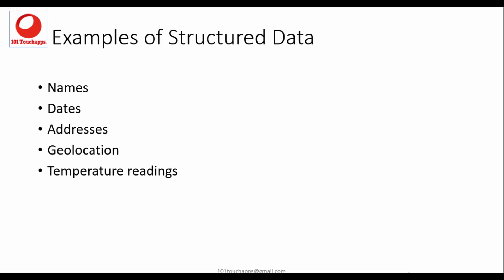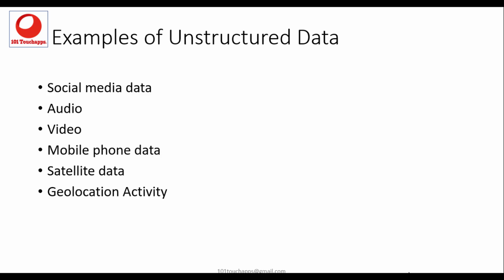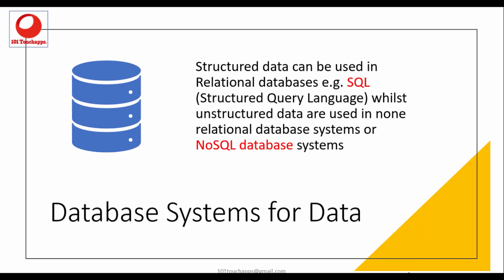So examples of structured data include things like names, dates, addresses, geolocations and temperature readings from sensors on devices. Now, an example of unstructured data, if you actually look at your mobile device, your mobile phone, that's a very good example of how you can keep generating unstructured data by your web browser, your audio, video, multimedia, things like satellite data, and also some geolocation activity.